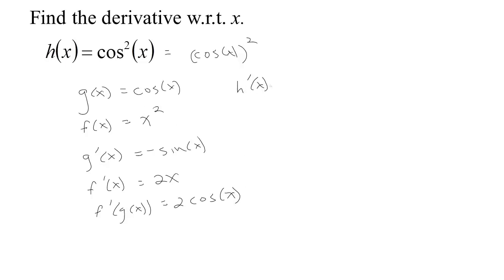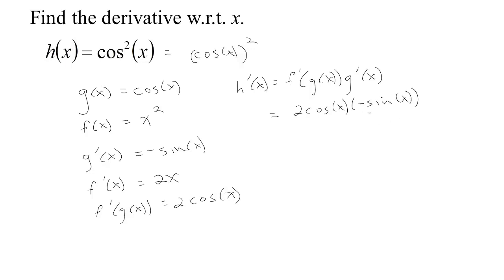So h prime should be the derivative of the outside evaluated at the inside, times the derivative of the inside. We figured out all these pieces: this is 2 times the cosine of x, and then the derivative of the inside is minus sine of x. Now I'm multiplying so I could multiply in any order — think of this as negative 1 times the sine of x. I could take 2 times negative 1, which gives me negative 2, and then we have sine x. And we found the derivative of that function.